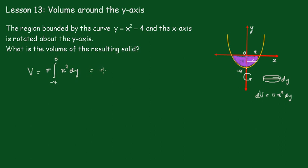Now that will be equal to pi integral from minus 4 to 0. Now x squared, we'll just rearrange this and take this across the other side, and it's going to become y plus 4 dy.